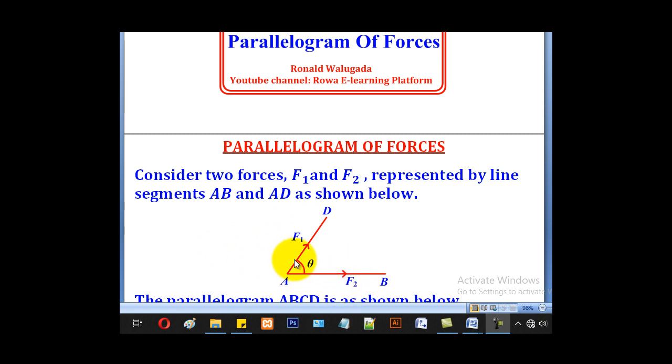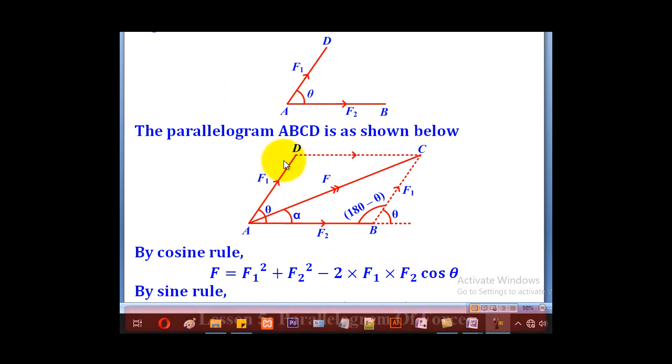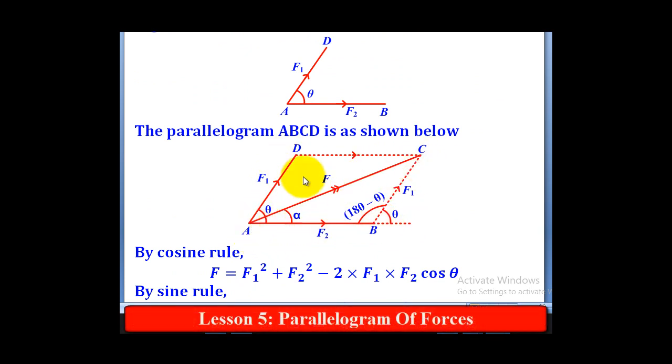So this is F1, this is F2 and the angle is theta in between them. The Parallelogram ABCD can be completed by reproducing this force here and also reproducing this force here. And then you can notice that this is dotted and this is dotted.